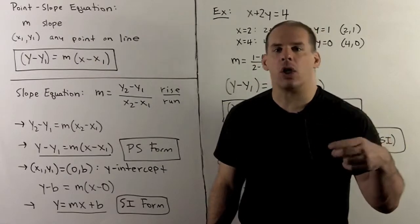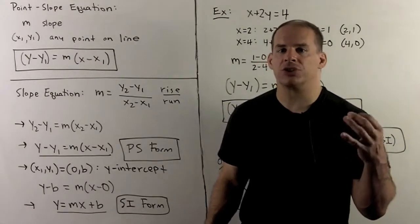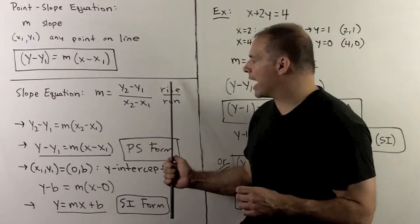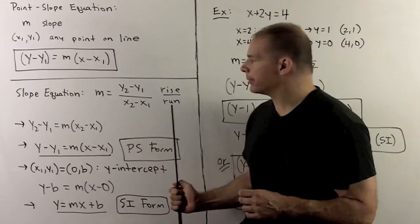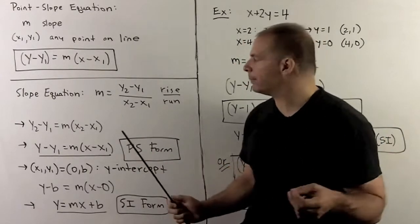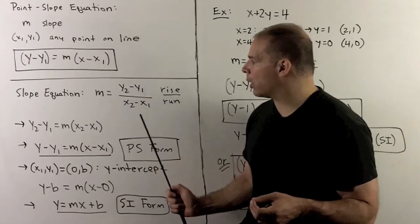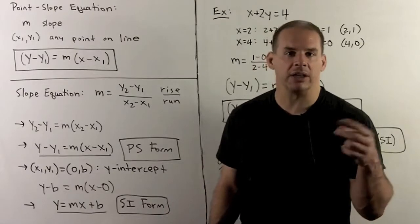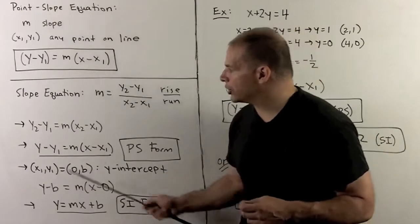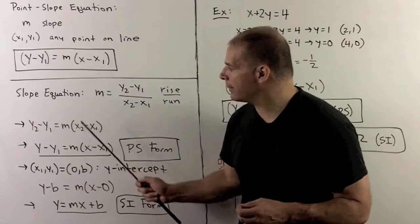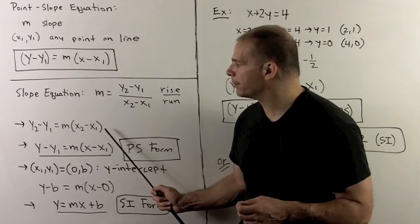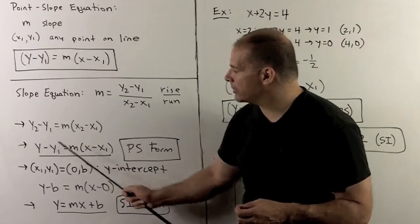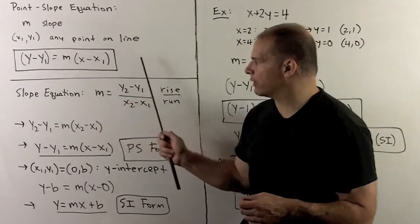To tie all of our equations together, let's start off with the slope equation. If the slope is equal to the rise over the run, and we're given any two points on the line, we have y2 minus y1 over x2 minus x1. If I clear out the denominator, we get y2 minus y1 equals m times x2 minus x1. If we erase the twos, what comes out is the point-slope equation of our line.